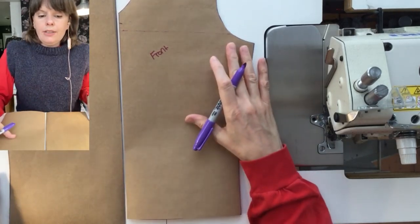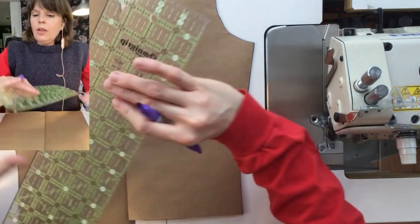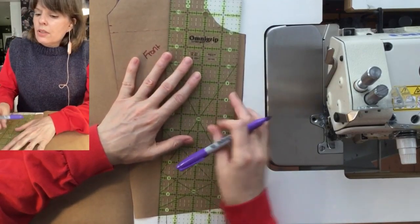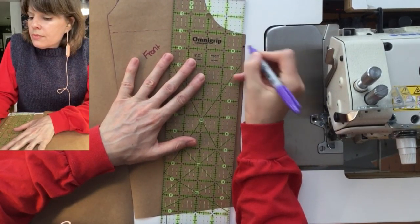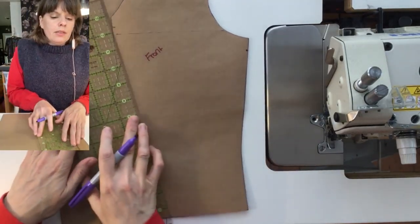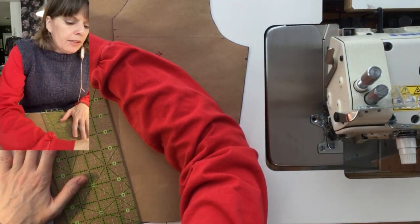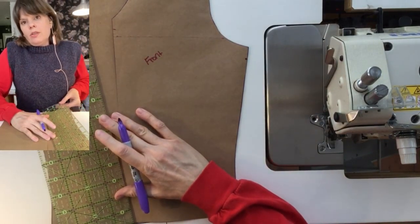So at the front and back armhole I would mark three quarters of an inch down the side seam and then I would use a French curve to blend the new armhole into the old armhole.